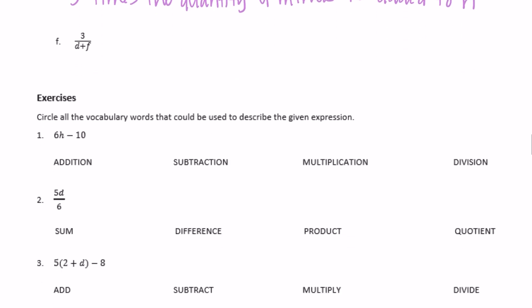And f. 3 over d plus f, or 3 divided by d plus f. Let's see, I'm going to say 3 divided by, I want to keep d and f together, so I'm going to say divided by the quantity d plus f.